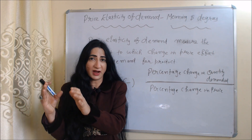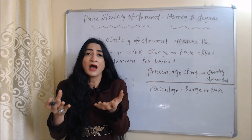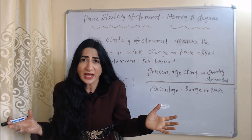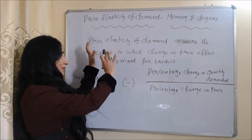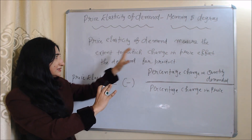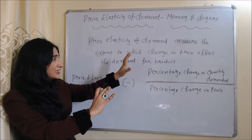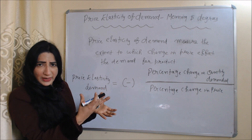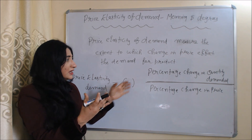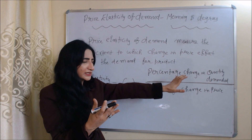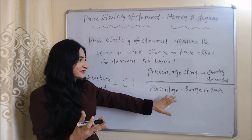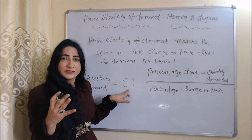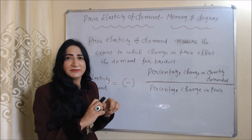Price elasticity of demand measures how much our demand changes to a change in price. Or we can say that it measures the extent to which a change in price affects the demand for a product. The formula for calculating price elasticity of demand is: percentage change in quantity demanded divided by percentage change in price. We put a minus sign here because demand and price have a negative relation.